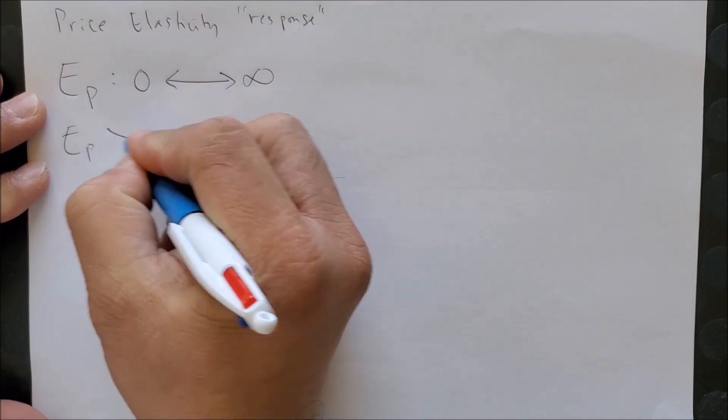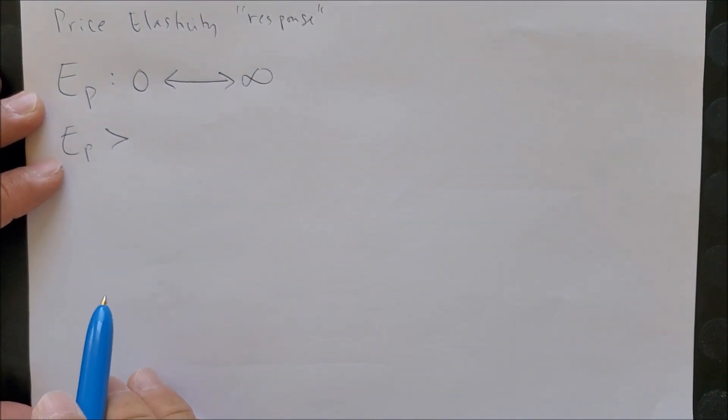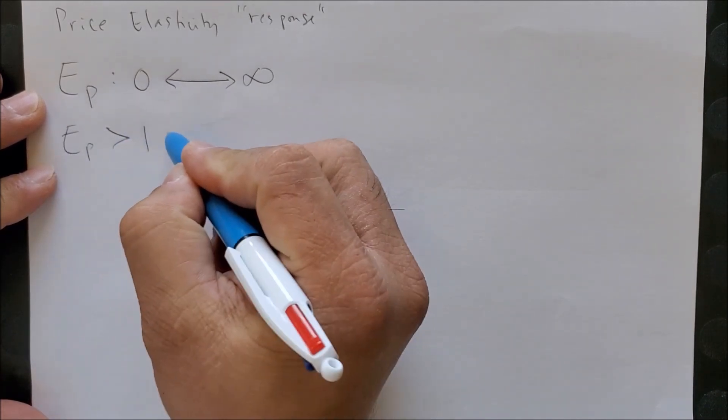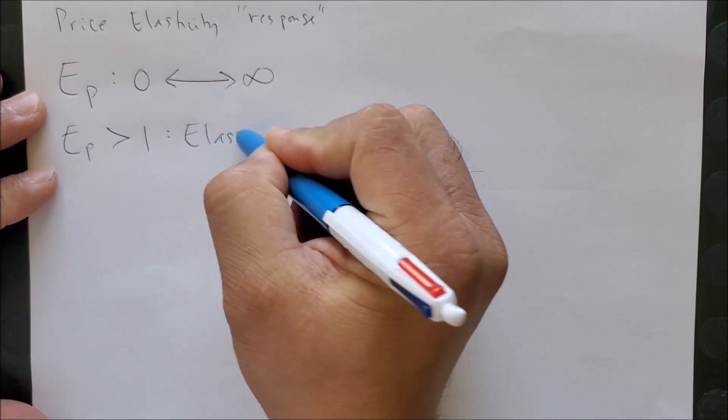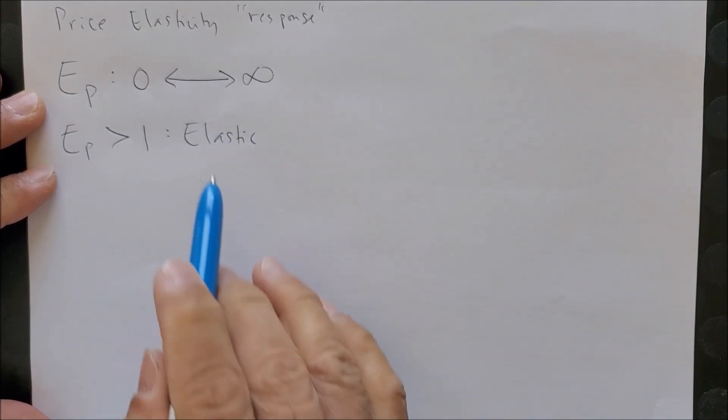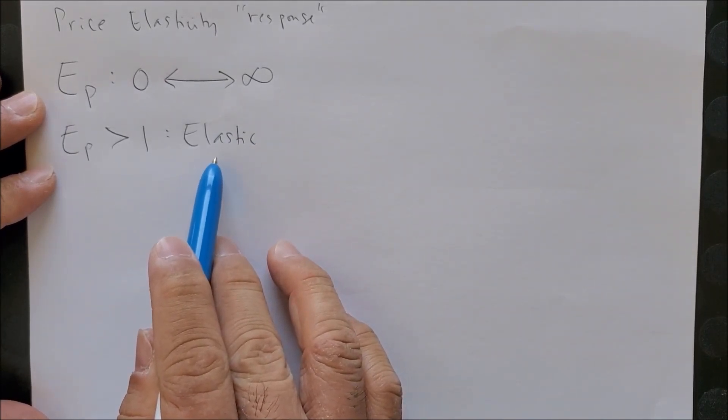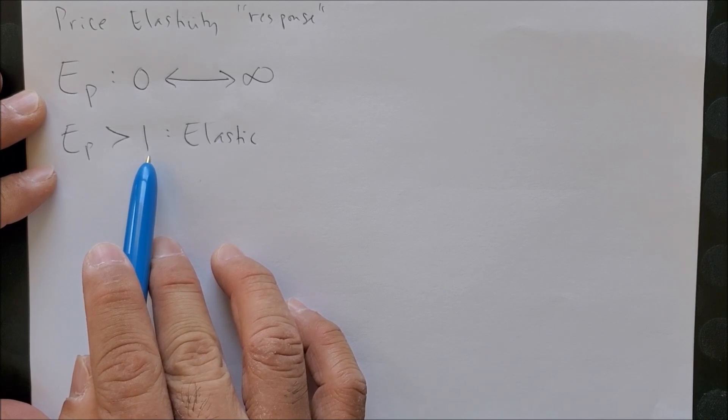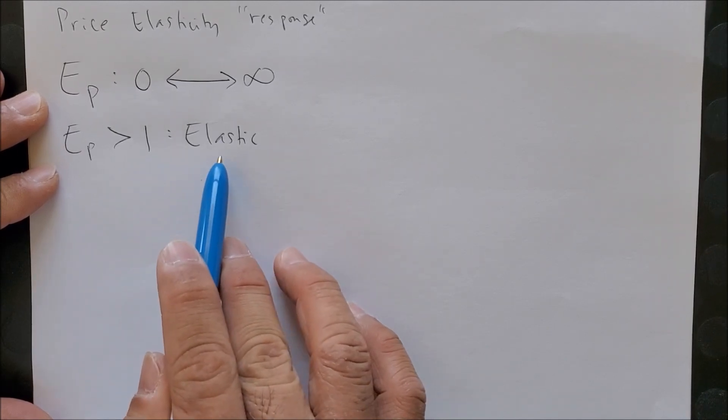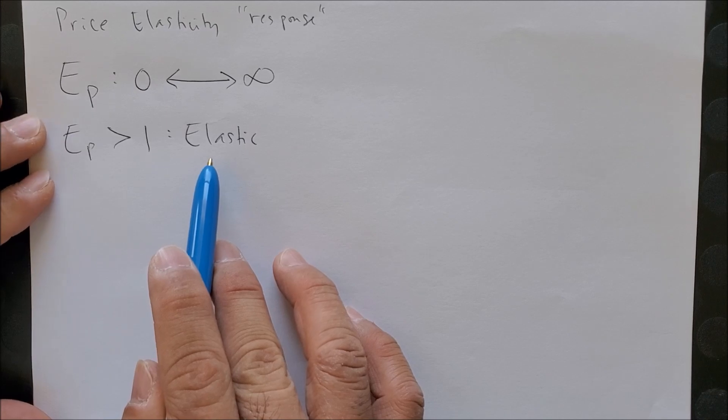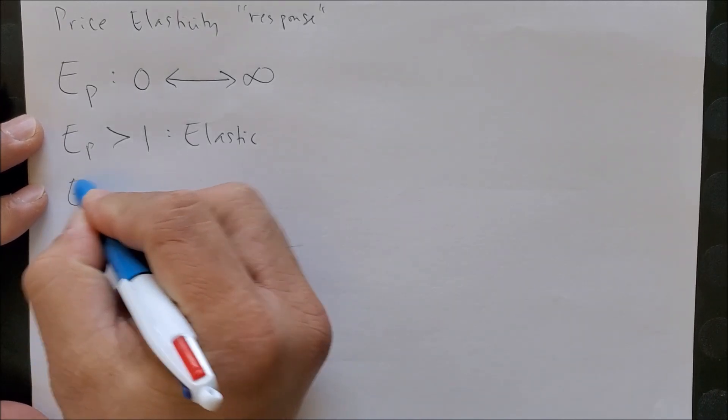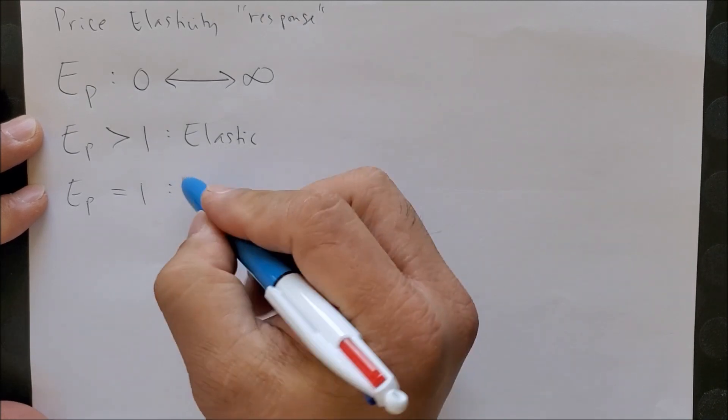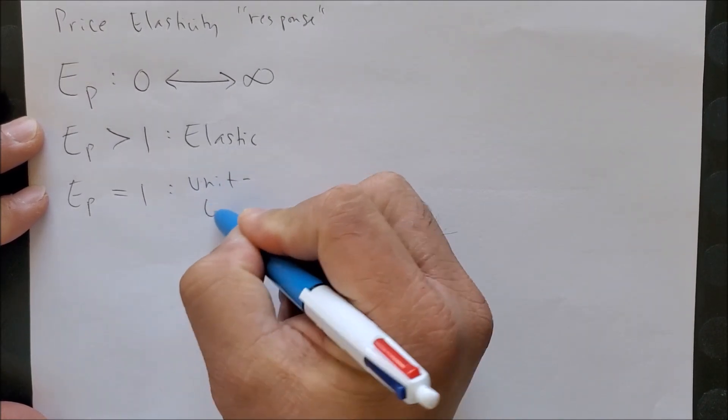The second rule is more like a guideline of exactly what the numbers represent. If we get a price elasticity that is greater than one, we can call this elastic, which means your response is fast. The higher the number—one, one hundred, one thousand, one million—the faster the response you will have as a consumer.